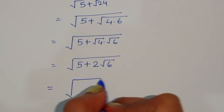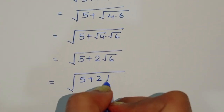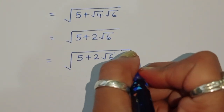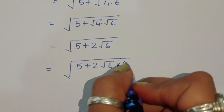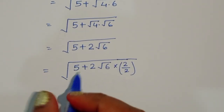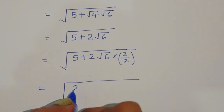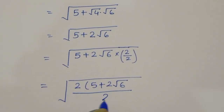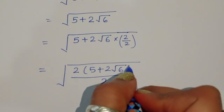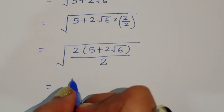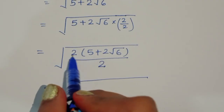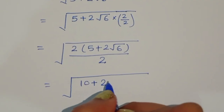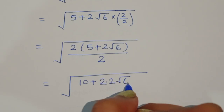Now we have to multiply and divide by 2 in the numerator and denominator. So we can write this as 2 times 5 plus 2 square root of 6, all divided by 2. That gives us 10 plus 2 times 2 square root of 6, divided by 2.